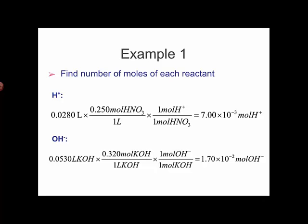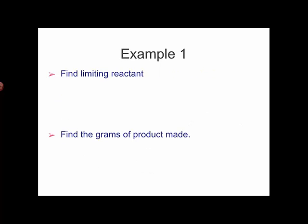We know that it's a 1 to 1 mole ratio, which means if we want to use up all 7.00 times 10 to the minus third moles of H-plus, we have to have exactly the same number of moles of OH-. And we have way more than we need. So H-plus is the limiting reactant.